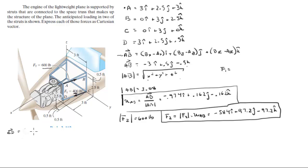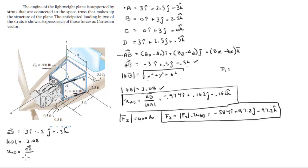Vector CD comes out to be 3i minus 0.5j plus 0.5k, and the magnitude of CD is 3.08. It's very similar — almost the same vector and same magnitude; the only difference is the signs are switched. The unit vector CD is found by dividing vector CD by the magnitude, which gives 0.974i minus 0.162j plus 0.162k.